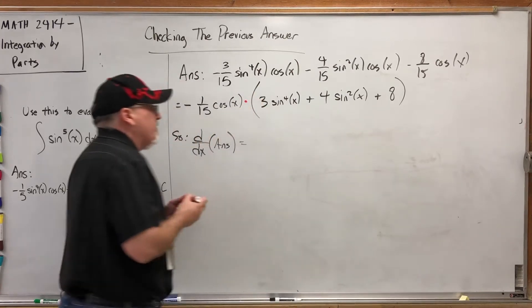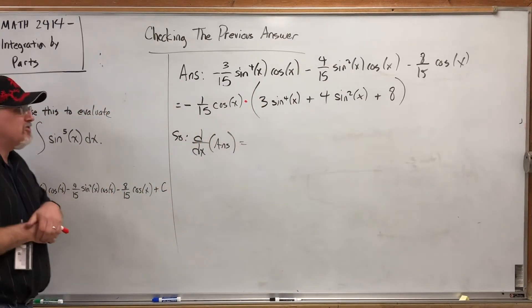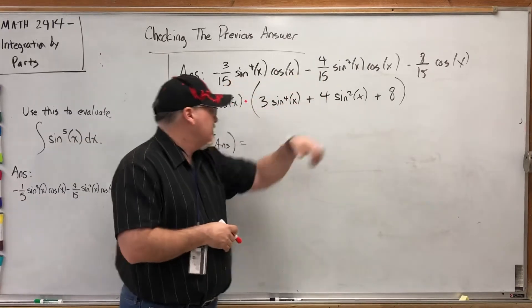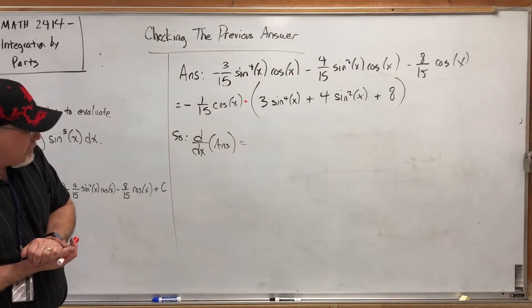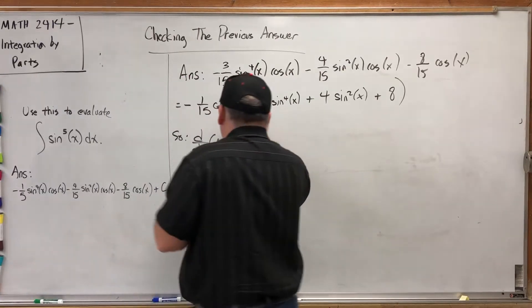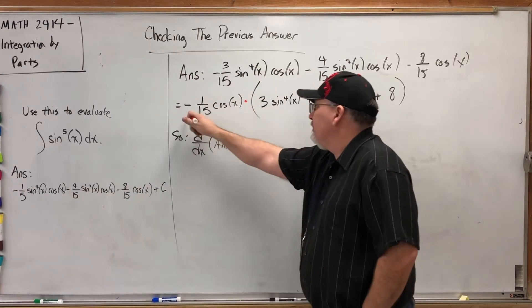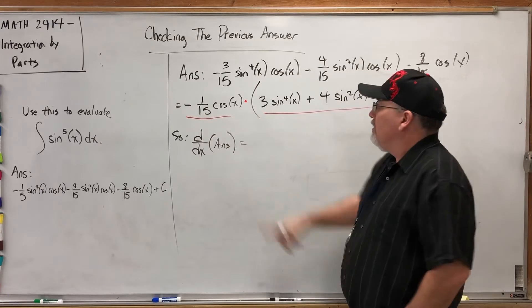If we take the derivative of this product, guess what rule we need? The product rule. The reason factoring out a common factor is beneficial is because now instead of having to do the product rule twice, I only have to do it once because there's only one product.